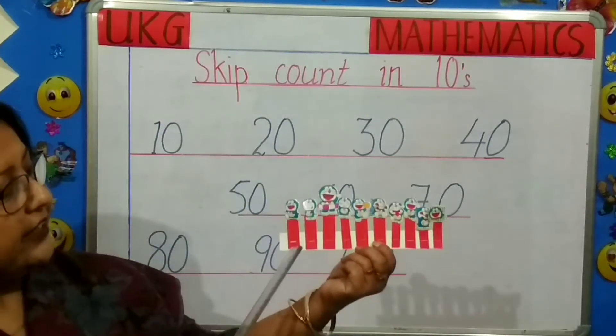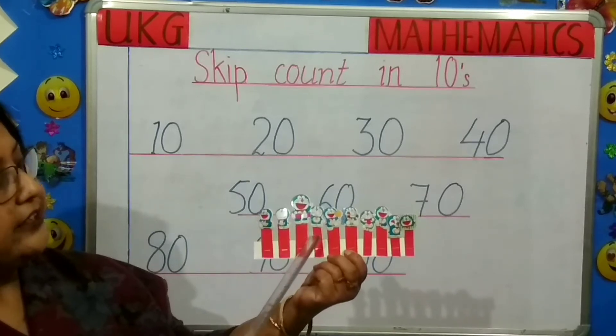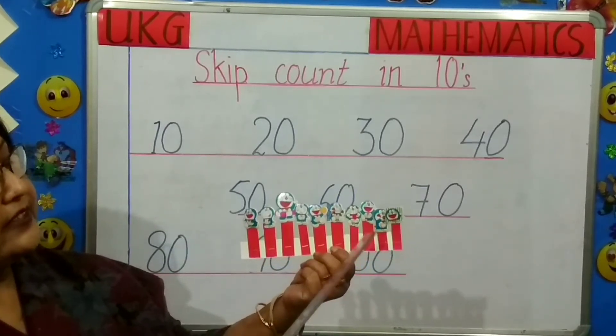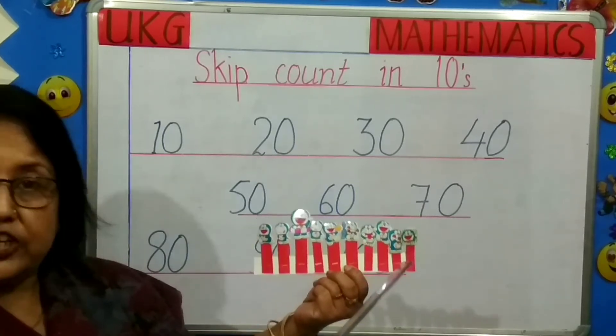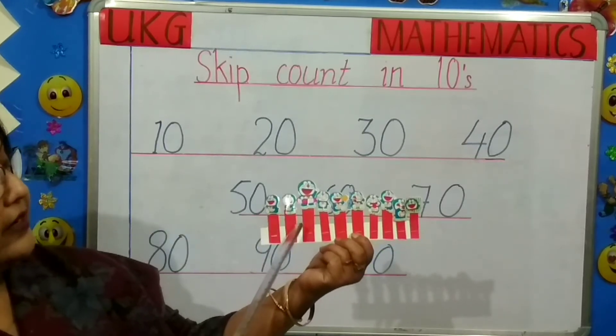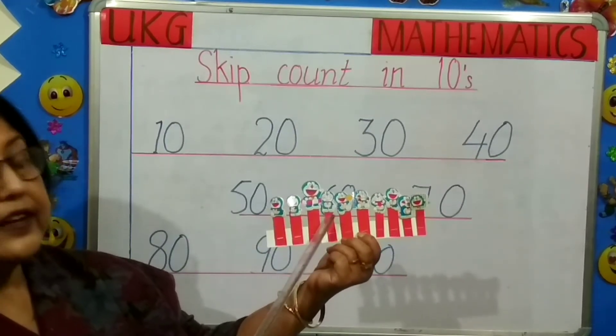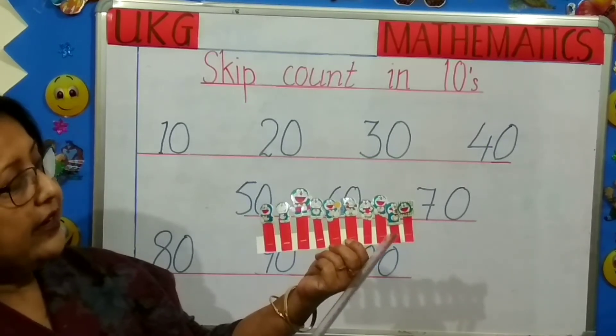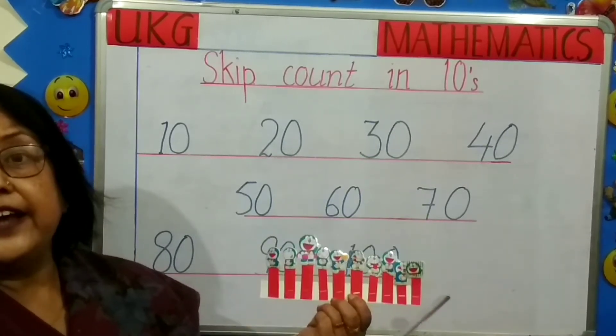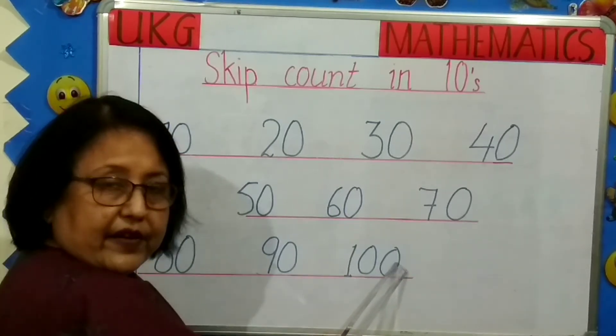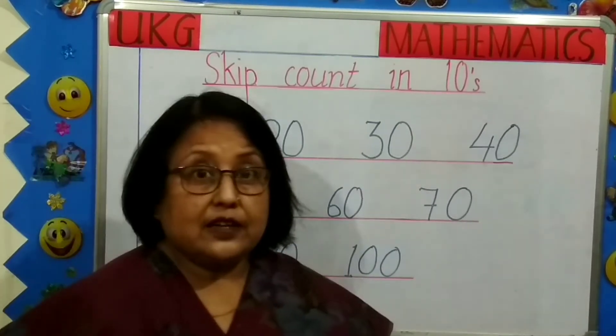Next, 81, 82, 83, 84, 85, 86, 87, 88, 89, 90. And next, 91, 92, 93, 94, 95, 96, 97, 98, 99 and 100. So we write 100. I hope it's clear children.